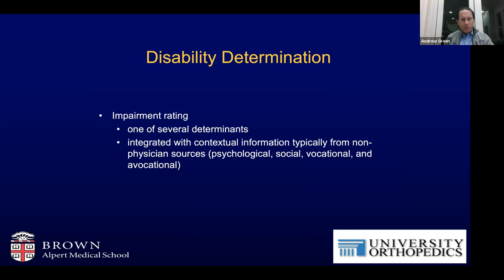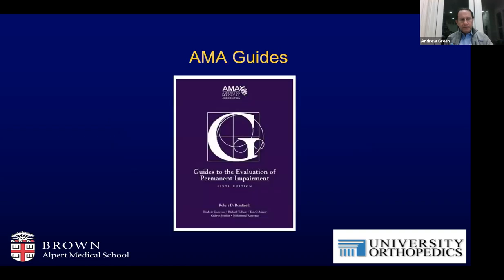Impairment rating is one of several determinants of a disability determination and is integrated with contextual information typically obtained from non-physician sources — such as psychological, social, vocational, and avocational sources. The AMA Guides to the Evaluation of Permanent Impairment, currently in the sixth edition, is generally considered the standard and accepted in most states for determining impairment ratings.